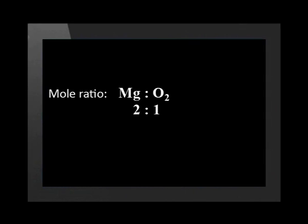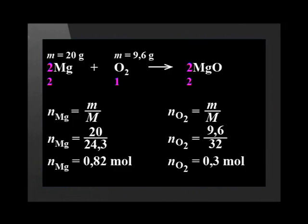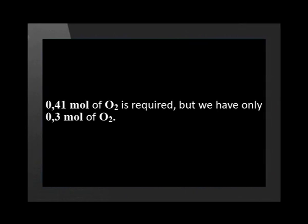We calculated that we had 0.82 moles of magnesium to start with. Let us use the mole ratio to determine how many moles of oxygen would be required to react completely with the magnesium. 0.82 moles of magnesium would require 0.41 moles of oxygen to react completely. But if we go back to the original equation, we can see that whilst 0.41 moles of oxygen is required, we actually started with only 0.3 moles of oxygen. So we do not have enough oxygen to react completely with the magnesium. This makes oxygen the limiting reagent and magnesium the substance in excess.